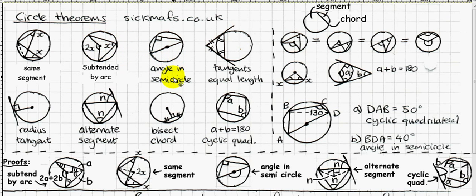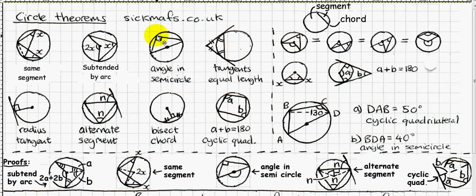Angles in a semicircle are always 90 degrees. If you draw an angle subtended by the diameter — starting from one end of the diameter, going up to the circumference and back down — it will always be 90 degrees, wherever on the semicircle you go.